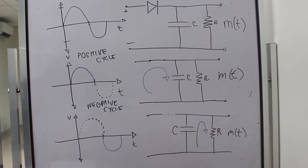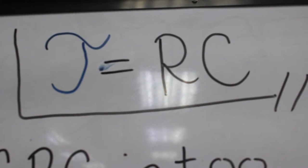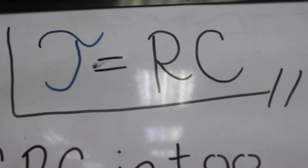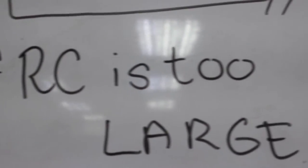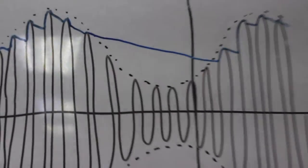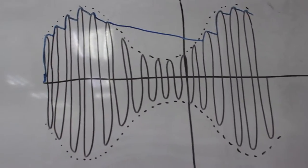The time constant RC must be selected to follow the variations in the envelope of the modulated signal. If the time constant is too large, then the capacitor will discharge too slowly. Thus, the output will not follow the envelope.